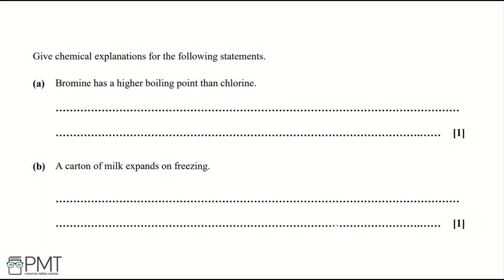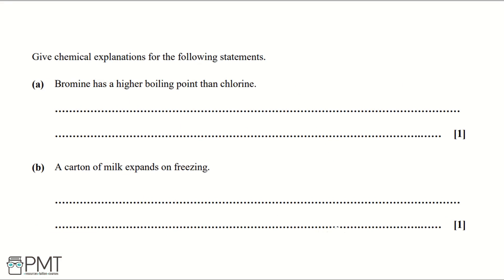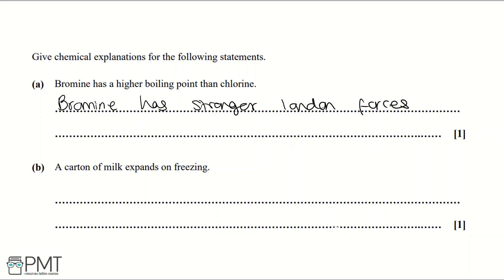Give chemical explanations for the following statements. Part A: bromine has a higher boiling point than chlorine. The reason is that bromine has stronger London forces of attraction — you could also say induced dipole interactions, but it's important with this specification that you say 'London forces'.